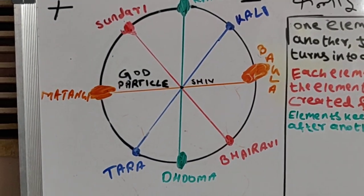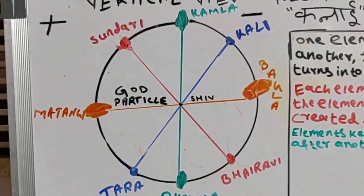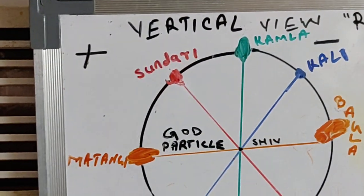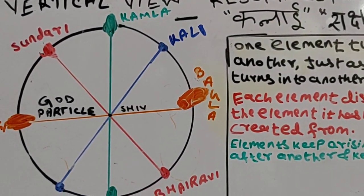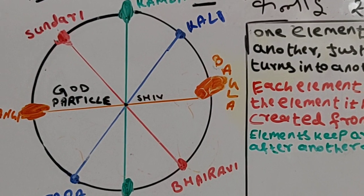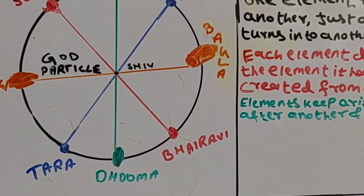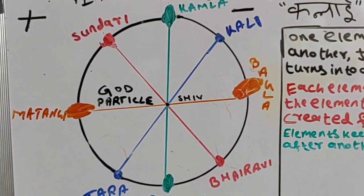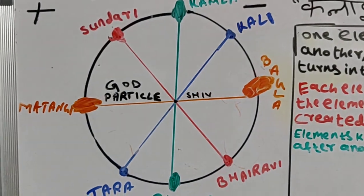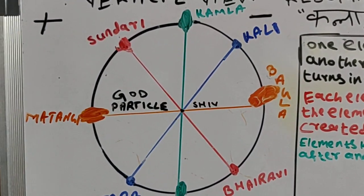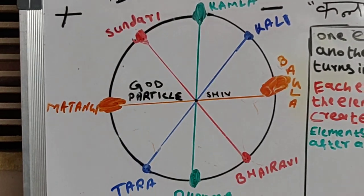We will talk about the reverse form in some other video. This is the positive side of the Budbuda and this is the negative side. The four negative Mahavidyas are Kali, Bagla, Bhairavi, and Dhumavati. The four positive Mahavidyas are Kamla, Sundari, Matangi, and Tara.